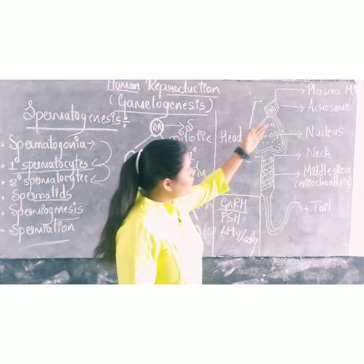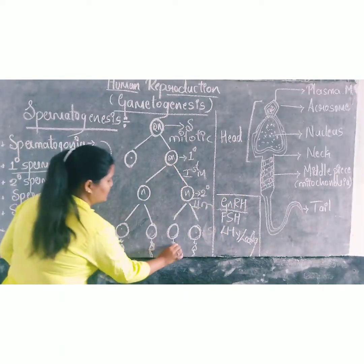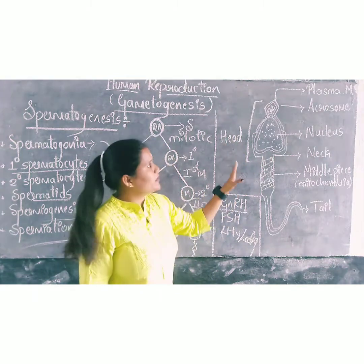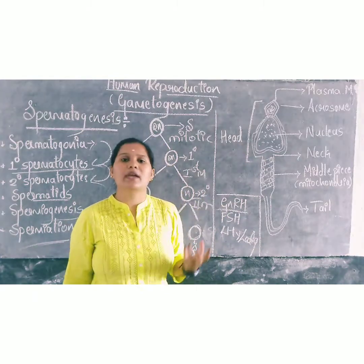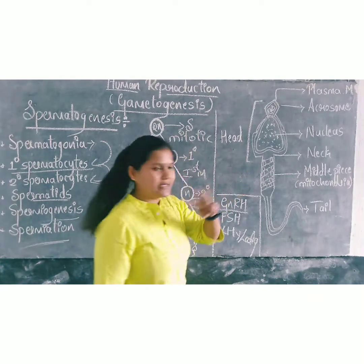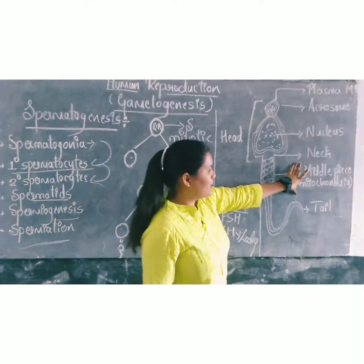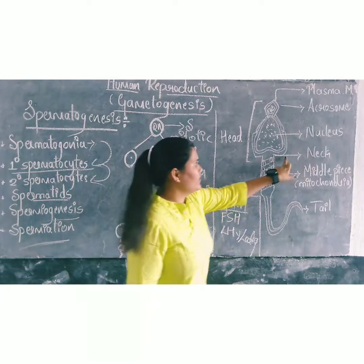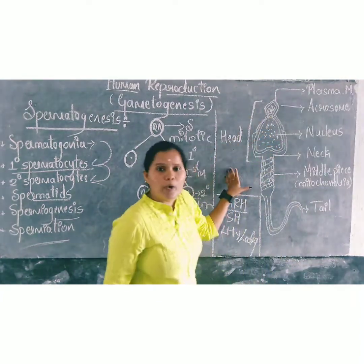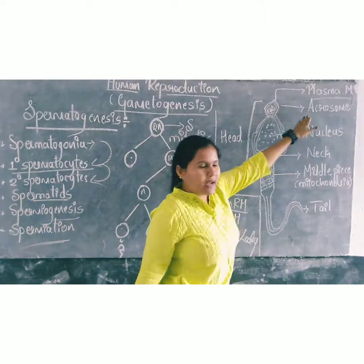Let's move on to the structure of the sperm. This sperm is a microscopic structure — we cannot see it with our naked eyes. This sperm has mainly three parts: head, middle piece, and tail, along with a neck. The whole body of this sperm is covered by a membrane called the plasma membrane.